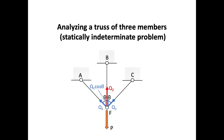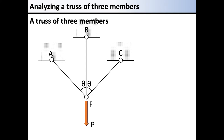Next is about the truss of three members. Three members are fixed on the ceiling, allowing free rotation. The members are fixed at points A, B, and C. The lower part of the three members is fixed at point F, which allows rotation, and is exposed to the load P.